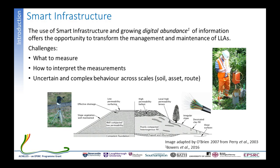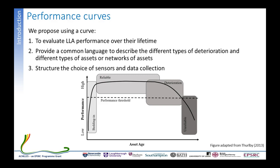Complex behavior can be considered across different scales: the behavior of the soil forming an asset, the performance of the asset as a whole such as a slope, or at the network scale. Within the Achilles project we've proposed using a performance curve to evaluate the performance of long linear assets over their lifetime, providing a common language for different types of deterioration. This can also help structure the choice of sensors and strategies for data collection.